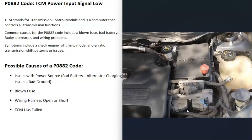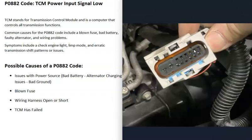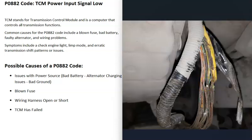A wiring issue is another possible cause — an open circuit, a short, or a bad connection. When TCMs are located in the engine bay, oil or grease can leak onto the connectors and cause issues. You can remove the connectors and inspect them, but be careful of small pins that can bend easily. Wires running to other computers may also have an open circuit, or a wire could be rubbing on the frame and shorting out over time.